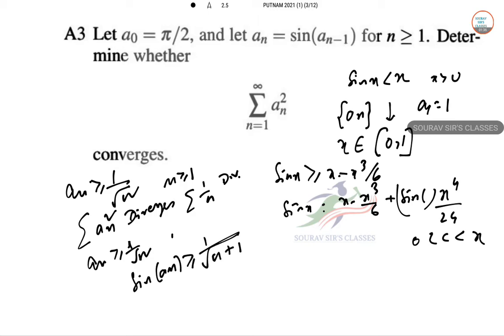Since sin(a_n) ≥ a_n - a_n³/6, it is sufficient to prove that a_n - a_n³/6 ≥ 1/√(n+1). If we just prove this part, then our point is clear.